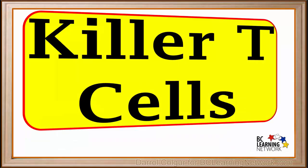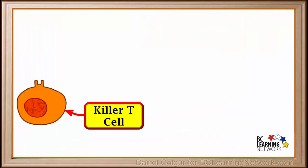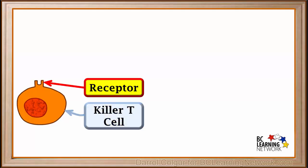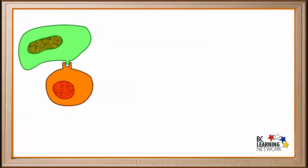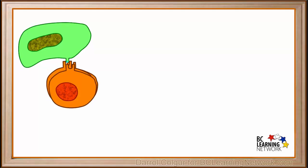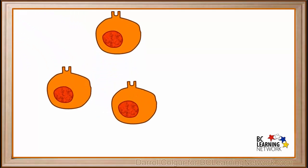Now we'll have a look at killer T cells and how they work. Our body produces a huge number of killer T cells, with many different variations of receptors on their surface. This particular killer T cell has a receptor that will bind with the specific antigen on the surface of a virus-infected cell or cancer cell. When the killer T cell binds to this particular cell, it becomes activated and makes clones or exact copies of itself.